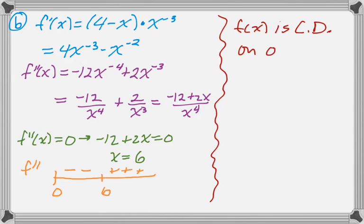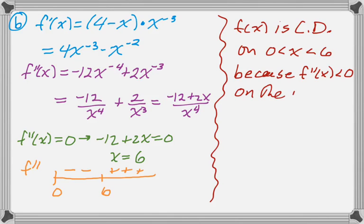So let's summarize what we found. f of x is concave down on the interval 0 to 6, and the reason for that is because f double prime is less than 0 on that interval. Alright, so that's part B.